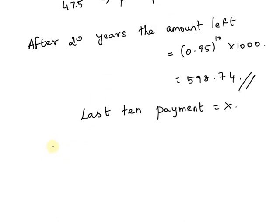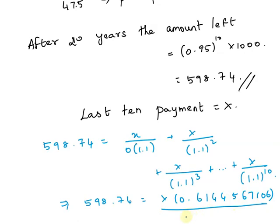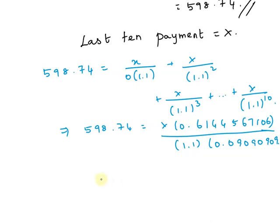598.74 equals x divided by 1.1 plus x divided by 1.1 squared plus x divided by 1.1 cubed, and so on, up to x divided by 1.1 to the power of 10. This simplifies to 598.74 equals x times 0.6144567106 divided by 1.1 times 0.09090909.